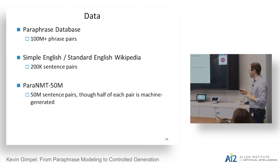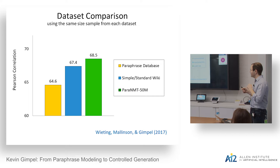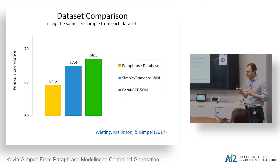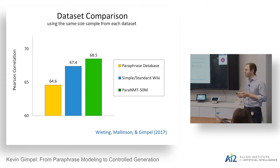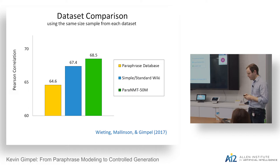We compared these three datasets using the same-size sample from each in terms of number of words. The Para-NMT dataset does at least as well as the Simple Wikipedia dataset, and both are much better than the Paraphrase Database for sentences. The Paraphrase Database is great for words and phrases, but not as good for sentences. The metric is Pearson correlation between cosine similarity from our sentence embeddings and the human annotations on an STS dataset.